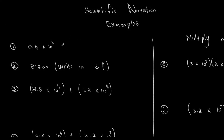Let's look at some examples. We've already learned in our previous video that the decimal point, if I have a positive exponent, would simply move to the right — one, two, three, four — so I can add zeros and my final answer will be 4,000. For the next one, my decimal moves to the left — one, two, three, four — giving us 3.12 × 10⁴.